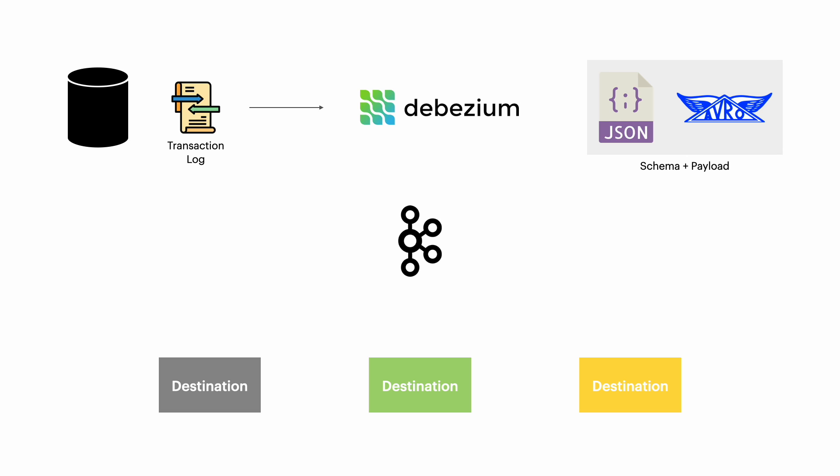Finally, Debezium publishes the change events into a messaging system like Apache Kafka, enabling multiple downstream systems to consume them in real-time.